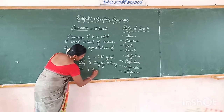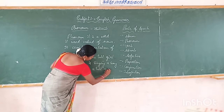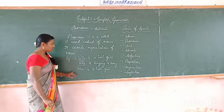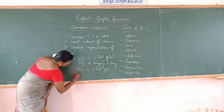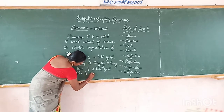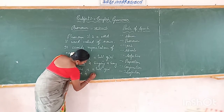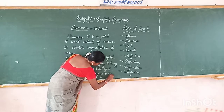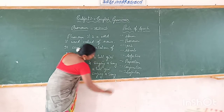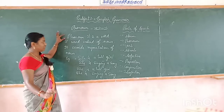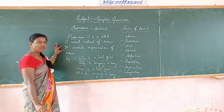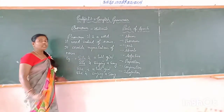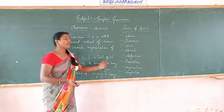Sita is a singer. She is a singer. She is singing a song. So dear students, pronoun means it is a word. It is used instead of noun. It also avoids repetition of the noun. For example: Sita is a singer. Sita is singing a song — here we use the noun two times.